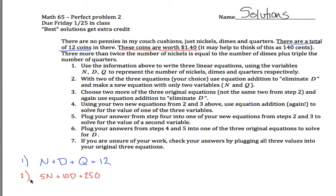And actually, I don't want a 2 here because this is meant to indicate step 1. So let me rewrite that 5N plus 10D plus 25Q is equal to $1.40, 140 cents.